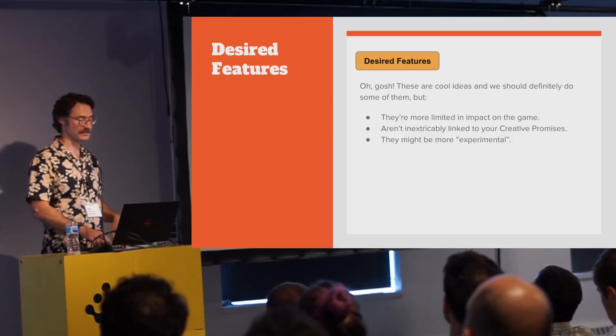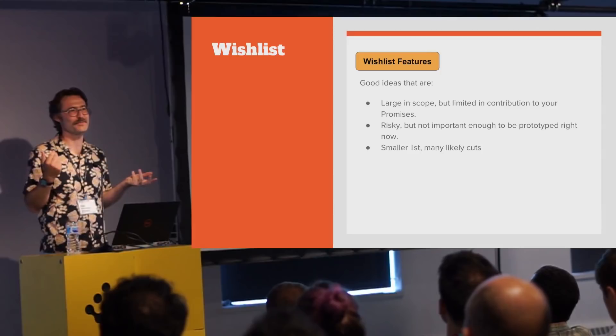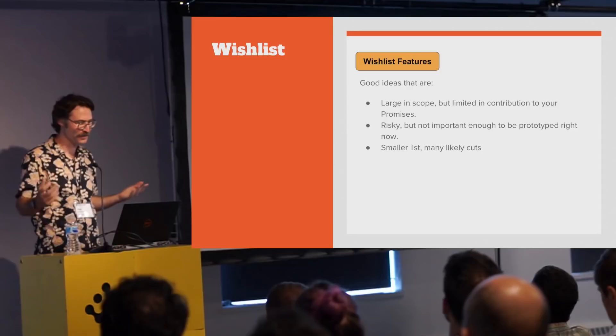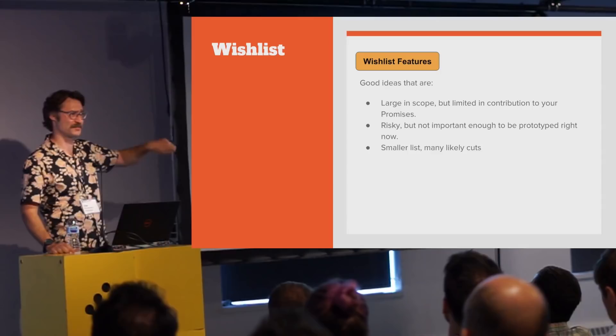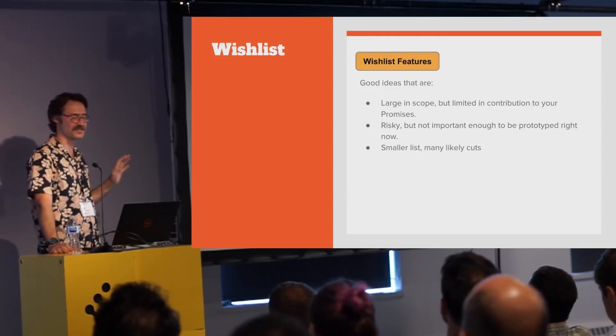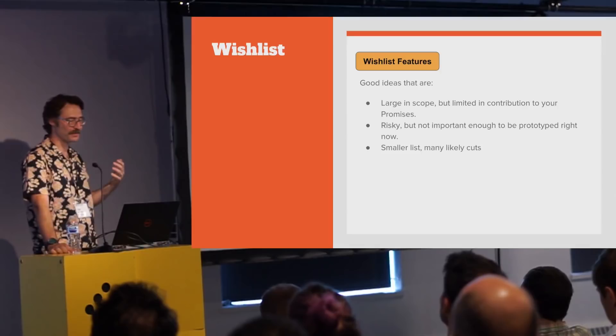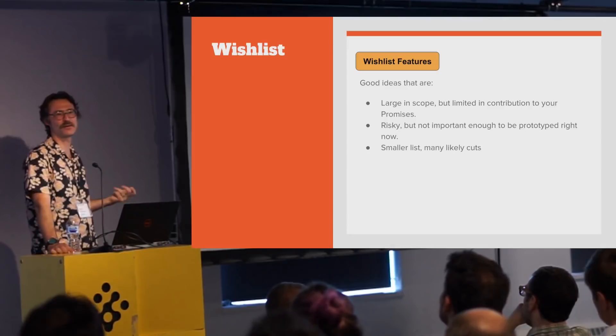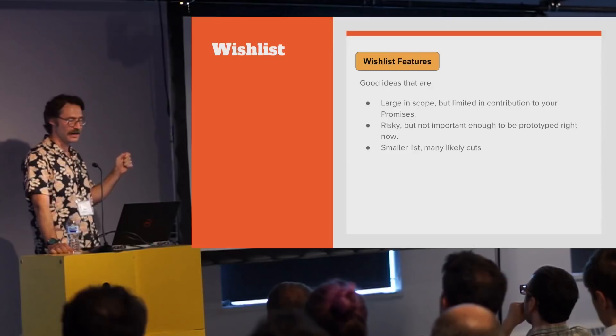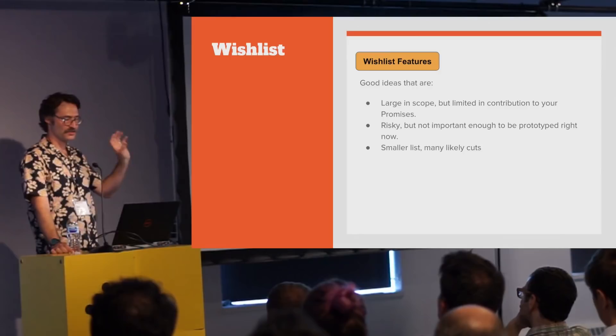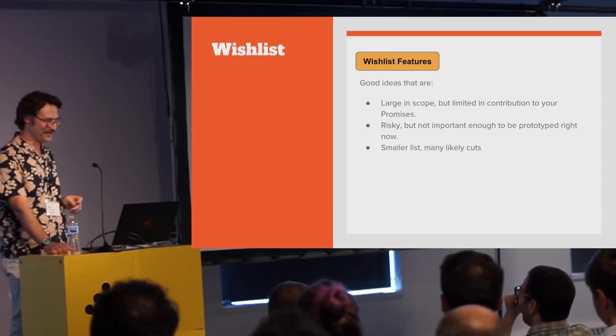Desired features are cool ideas you're really excited about but have slightly limited impact, or you can imagine shipping the game without them, or they're alternate competing ideas you're not sure which to do. There's usually a ton of stuff in this big middle category, and you'll probably ship a very small fraction of it. Wishlist features are things that seem good but are probably not necessary, probably out of scope. This list is usually small because people can tell whether an idea can at least make it to desired features — and realistically, about 90% of everything off the wishlist does get cut.